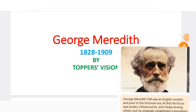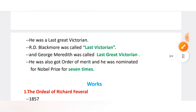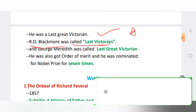In this video we will talk about George Meredith, one of the writers of the Victorian age. He was born in 1828 and died in 1909. He was the last great Victorian writer. Note for confused exam questions: RD Blackmore is called 'the last Victorian,' while George Meredith is called 'the last great Victorian.'